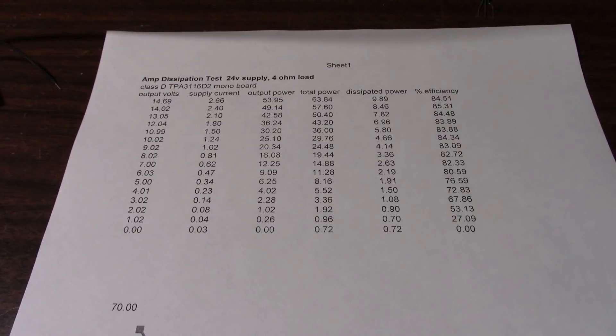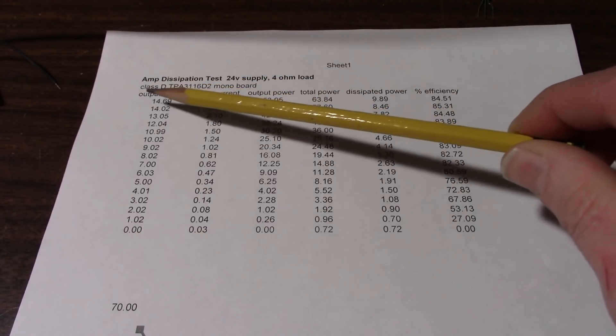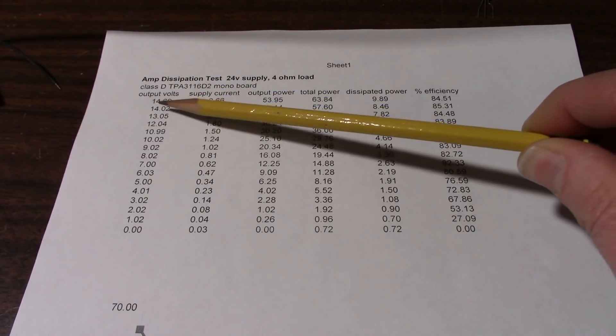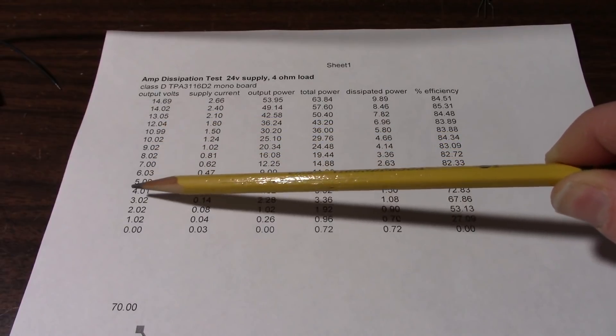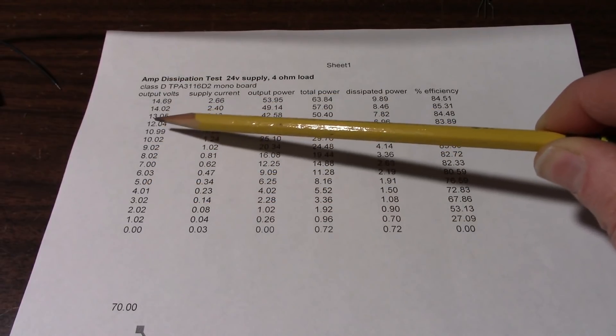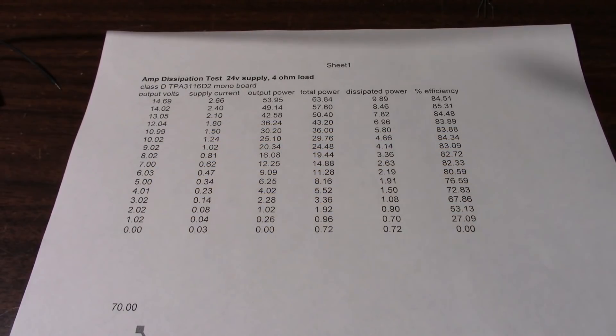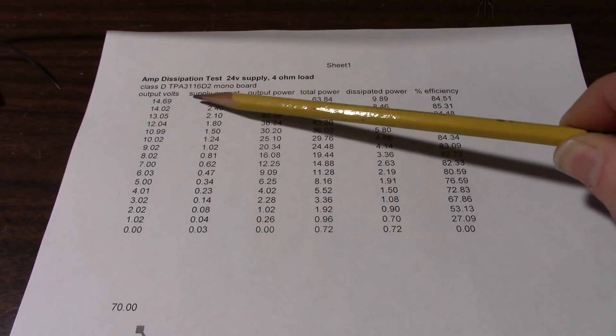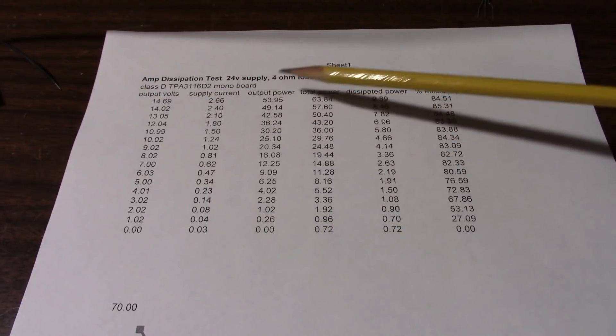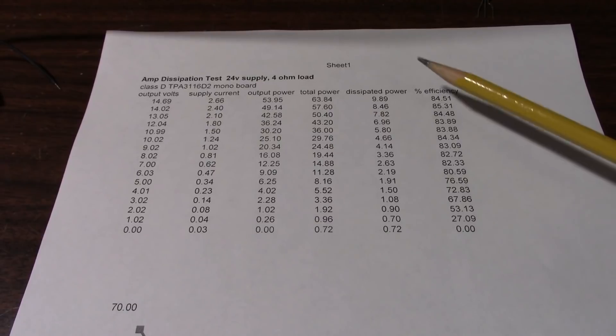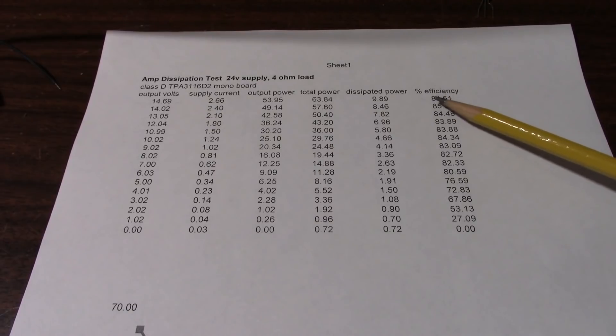Well, here are the results. So this column is the output voltage. Aside from the maximum clean power, I stepped down one volt. You know, I couldn't tune it in perfectly. I got as close as I could to each voltage level all the way down to zero. This column is the supply current, output power, total power, dissipated power, and efficiency. I was actually impressed with the efficiency. I thought it would be lower in real world measurement with the 4 ohm load.